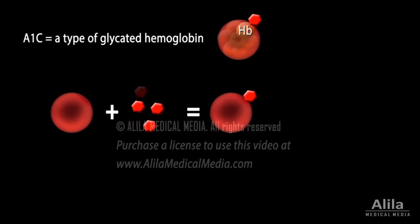The higher the blood glucose levels, the more glucose binds to hemoglobin, and the greater the amount of A1c.